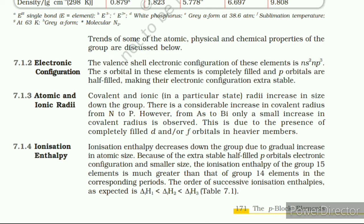7.1.3 Atomic and Ionic Radii. Covalent and ionic radii increase in size down the group. There is a considerable increase in covalent radius from N to P; however, from arsenic to bismuth only a small increase in covalent radius is observed. This is due to the presence of completely filled d and f orbitals in heavier elements.